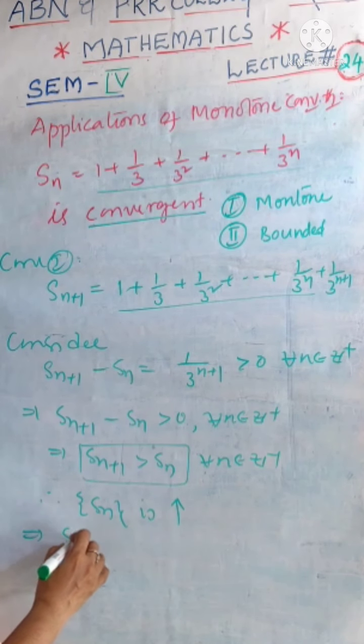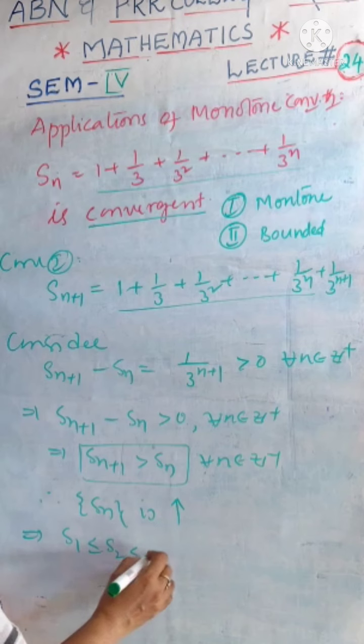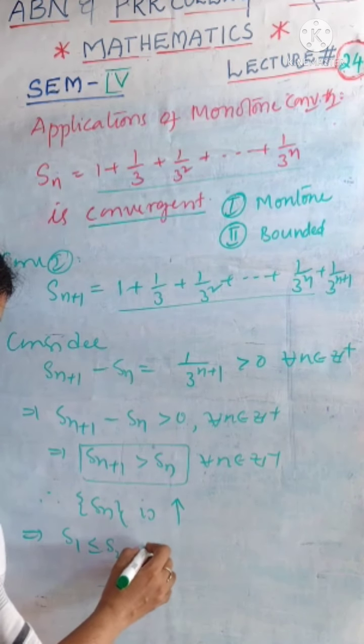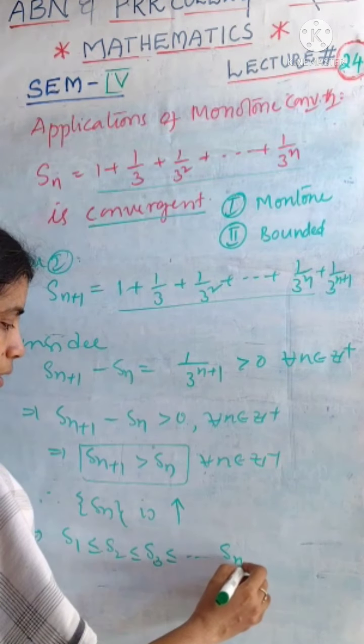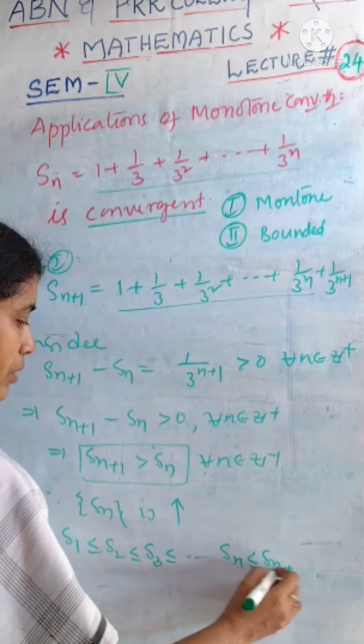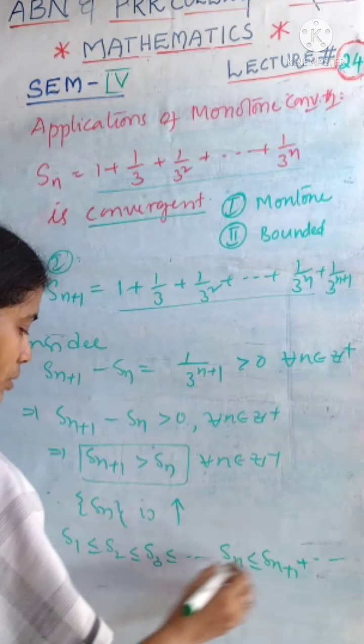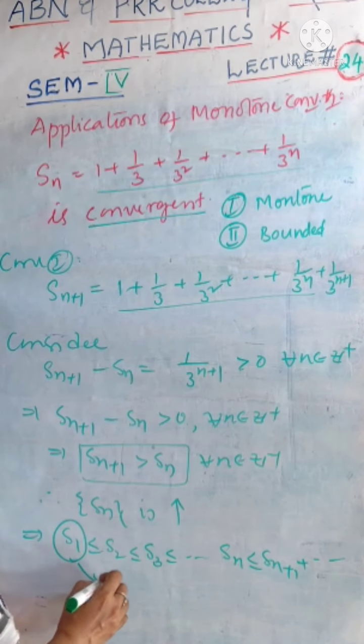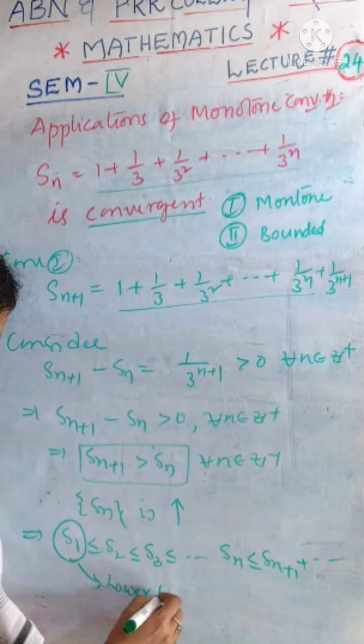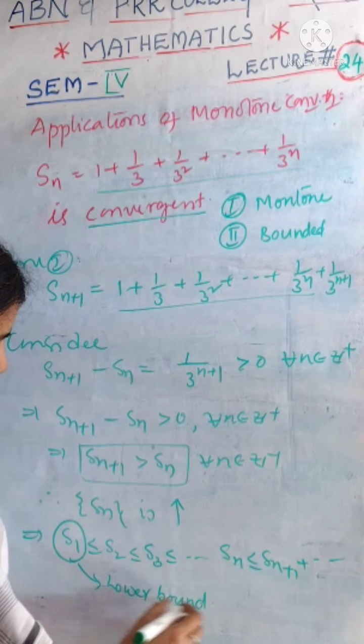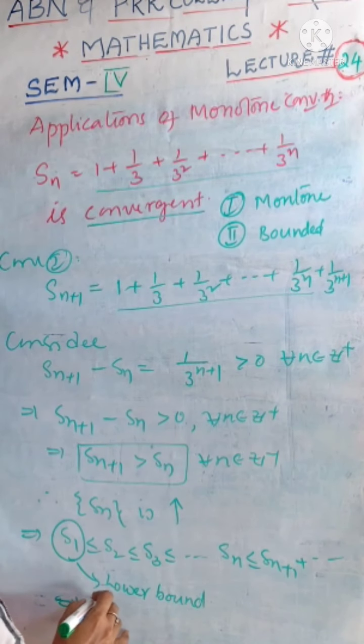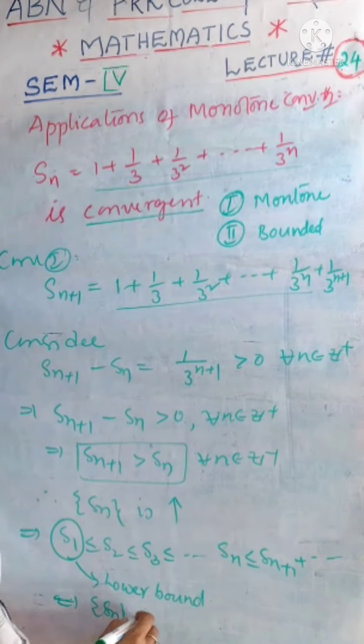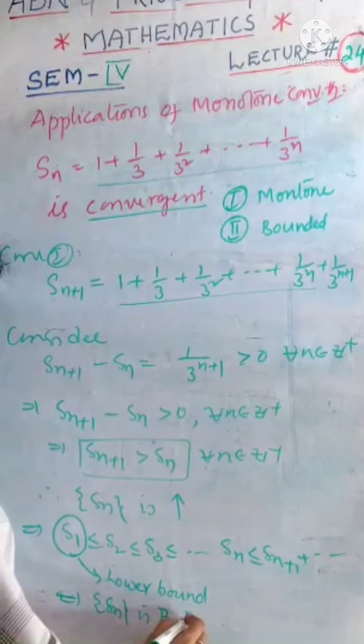That means our sequence terms are like this: smaller terms are smaller than bigger terms. Sn is less than or equal to Sn plus 1 and so on, which means that Sn is the least term. Then it is the lower bound. Whenever we obtain lower bound, this implies sequence Sn is bounded below.